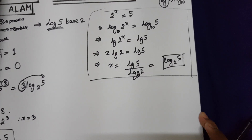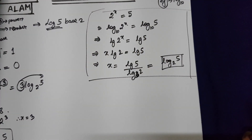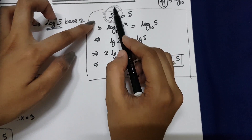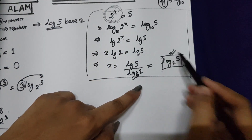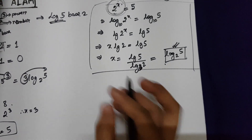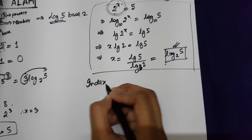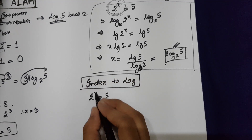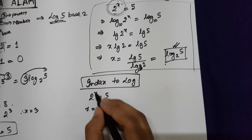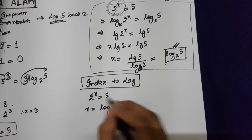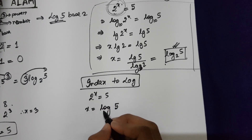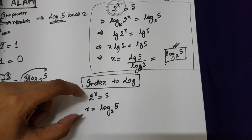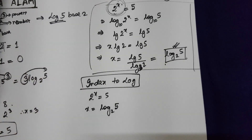Whenever you need to convert any index form into logarithmic form — for example, the initial term was 2 to the power of x — that is your index form. As a shortcut: if you need to subject the power x, just write log at the right side of the equation with the number (5) as the log's argument and the base number (2) as the log's base. For example, 3 to the power of x equals 7, then x equals log of 7 to the base 3. This is how you convert an index form into logarithmic form.